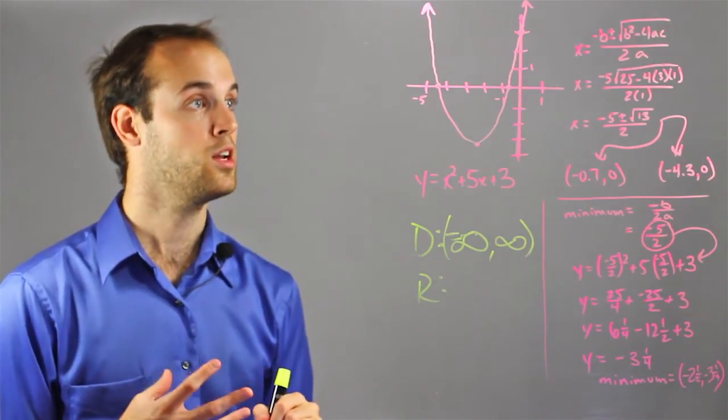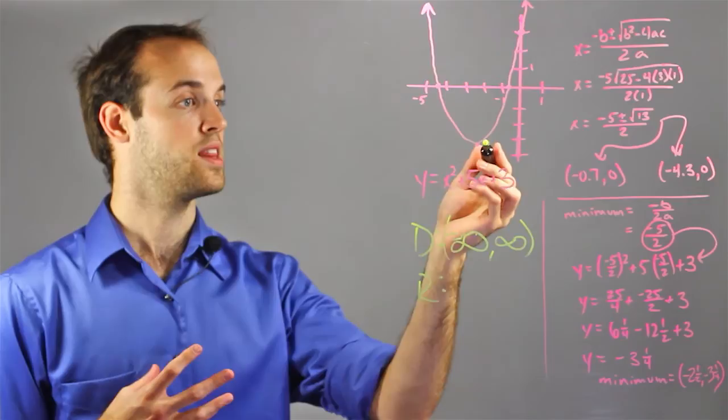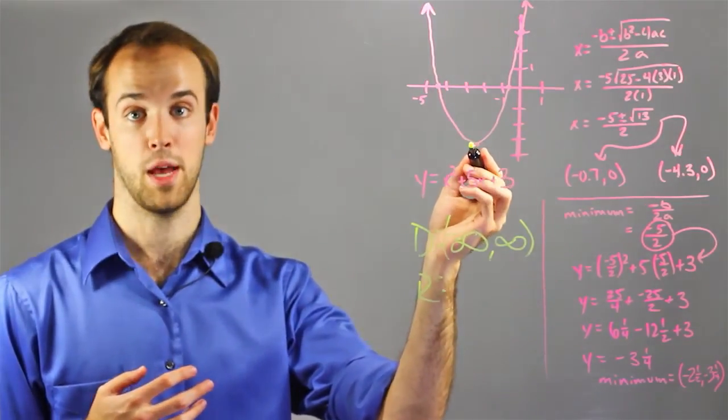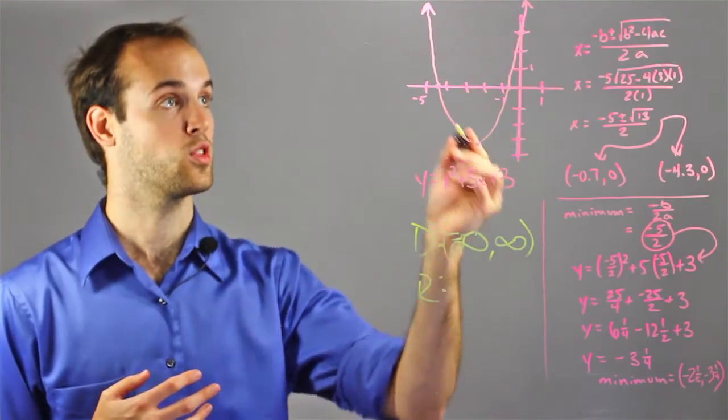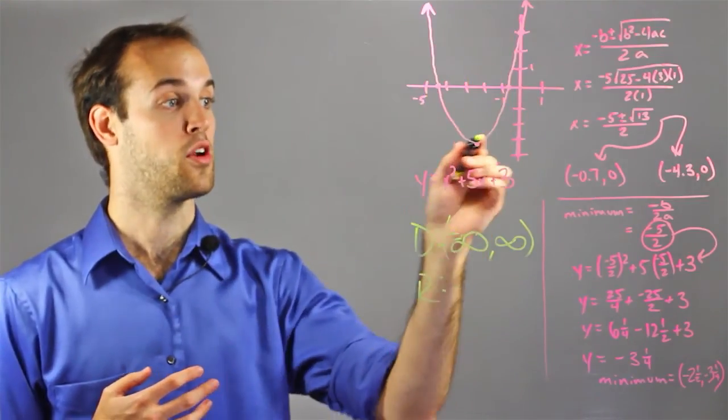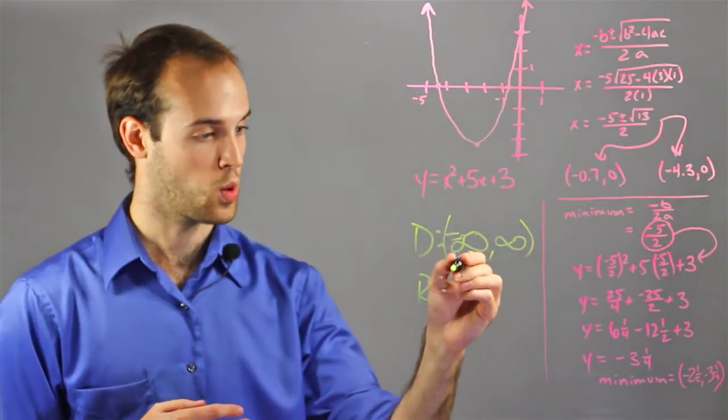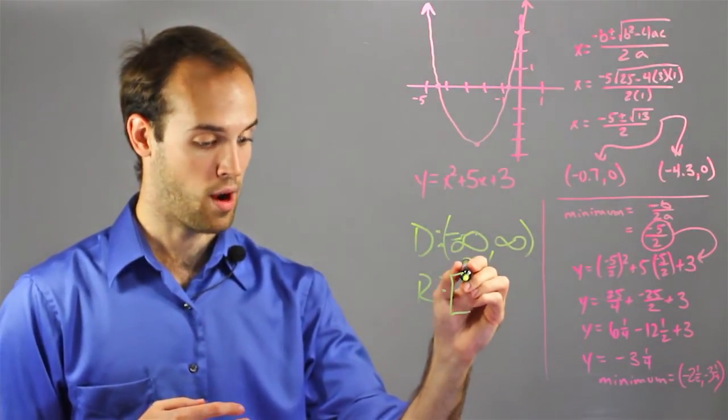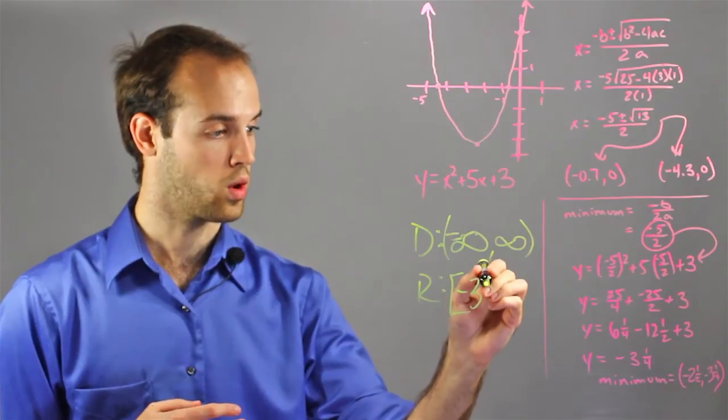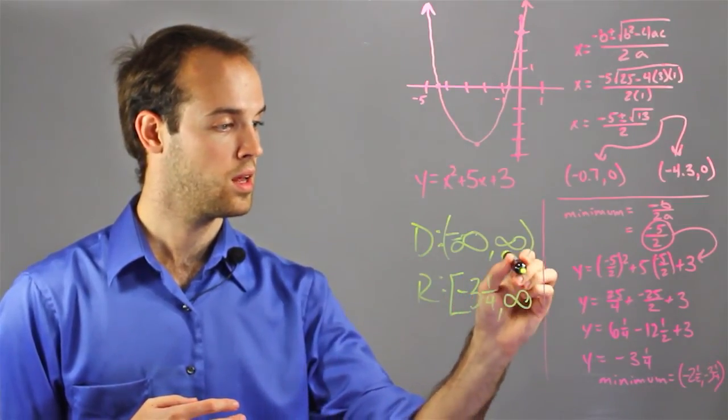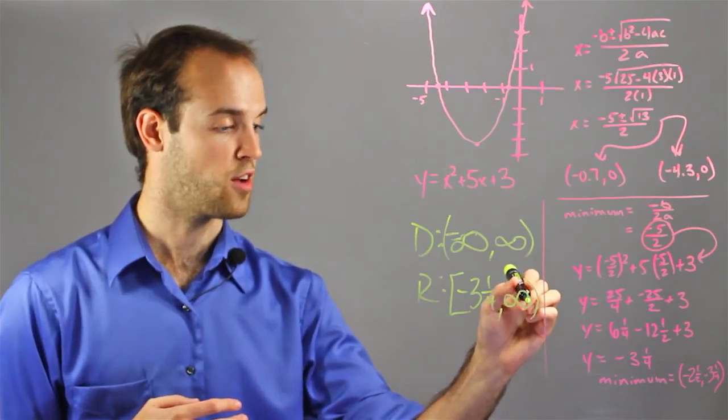The range is going to be a little more restricted. We see that we start the function down at negative 3 and a quarter, remember at the minimum value, and from there the y's just keep getting bigger. But they're never going to go down below this point. So my range is going to be with a hard bracket, negative 3 and 1 quarter, all the way up to positive infinity with a soft bracket.